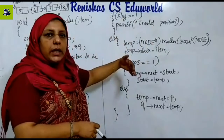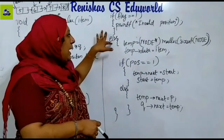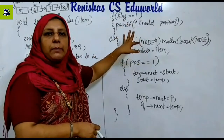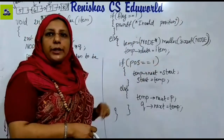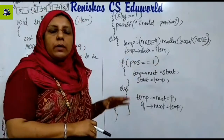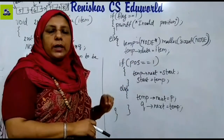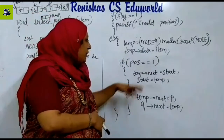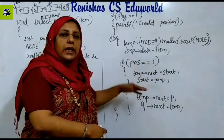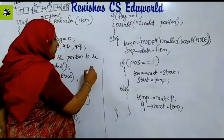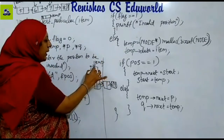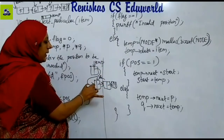If the flag is set, we will not insert the element — else means invalid position. Otherwise, we allocate memory: temp equals malloc of size of node. For the data field, temp->data equals item. For position 1, temp->next equals start and start equals temp.